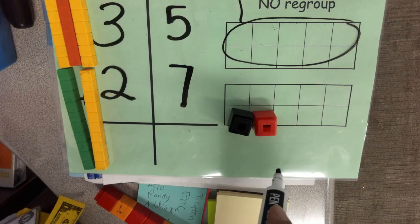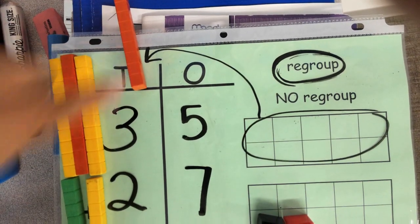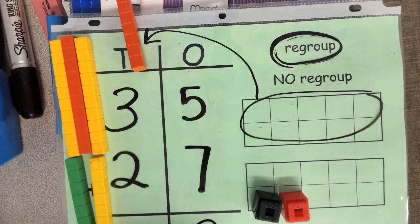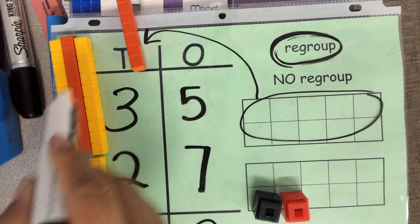How many ones do you have left over in the ones place? One, two. Two, and you regrouped your one over here. So now you're looking at the tens place. One plus three. One plus three is four: one, two, three, four.